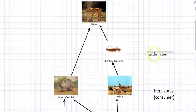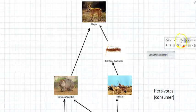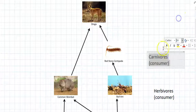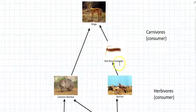So now you can see that the centipede, because it eats herbivores, it must be a carnivore. And the same for the dingo. So we've got both these levels here are carnivores.